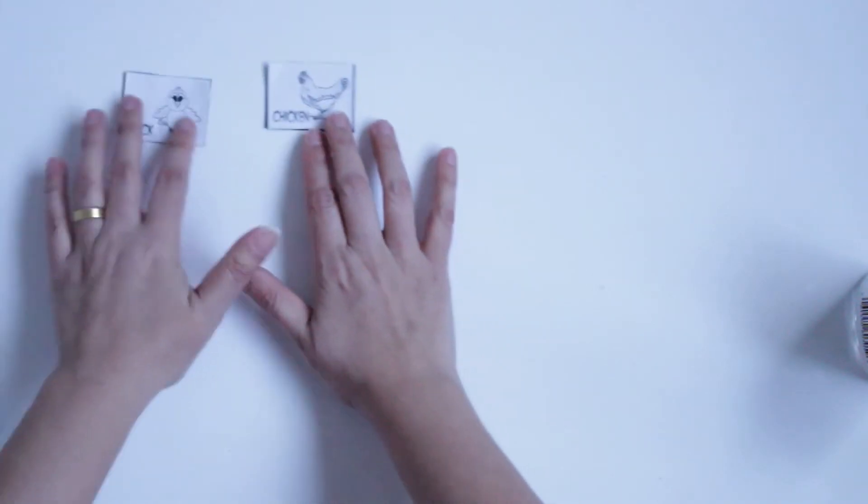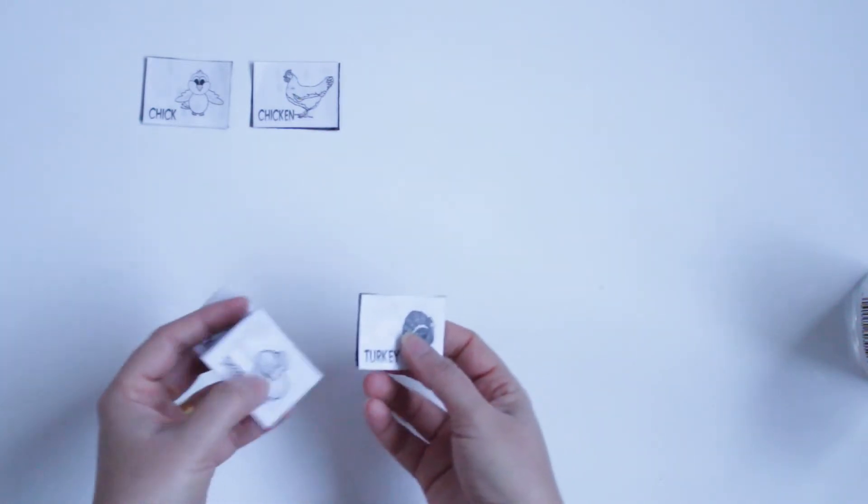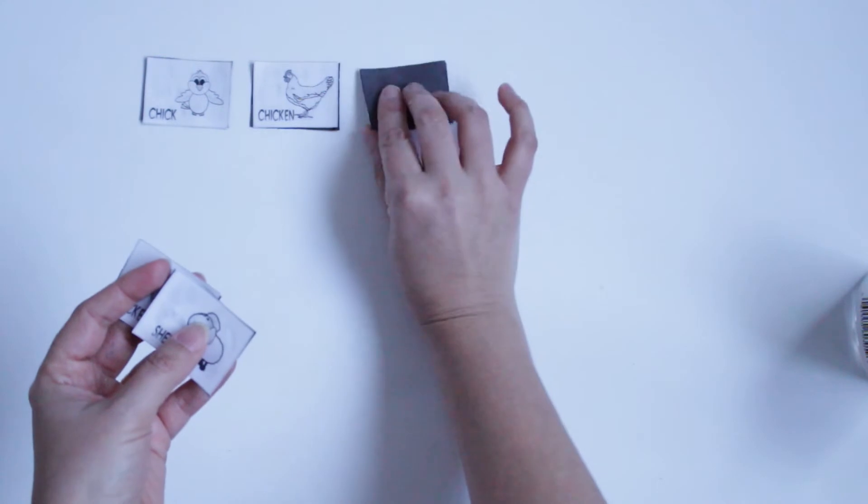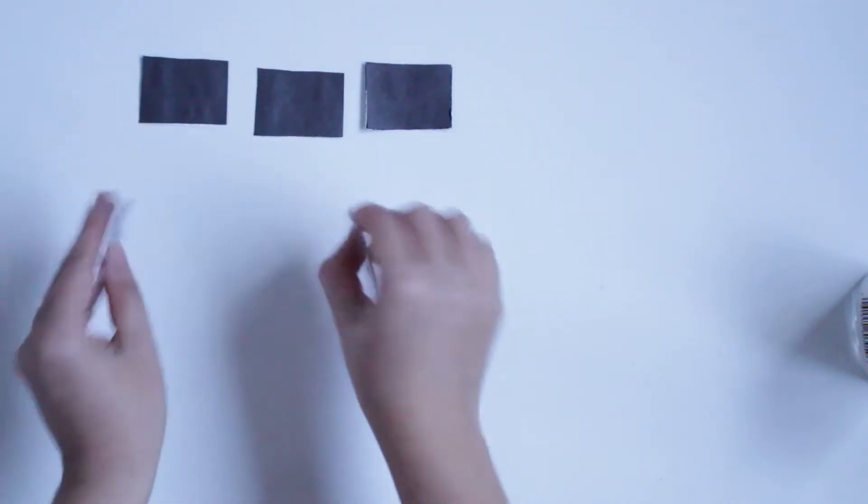After you do that with all the pictures and they are dry, you can ask the kid to play. How they play is they turn all the pictures facing down, upside down like that.